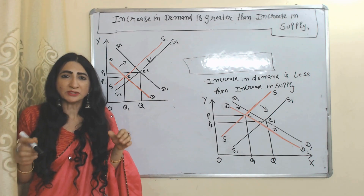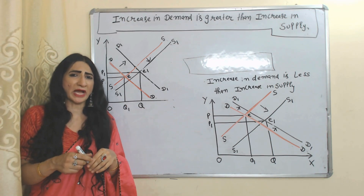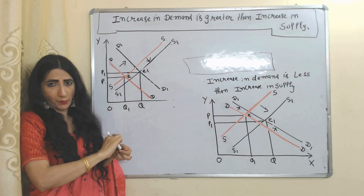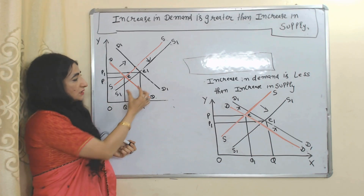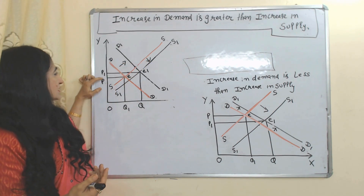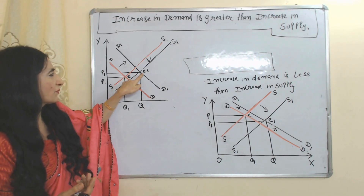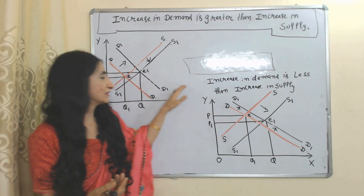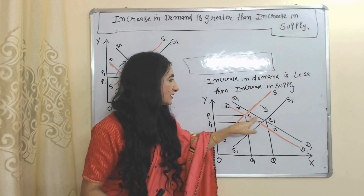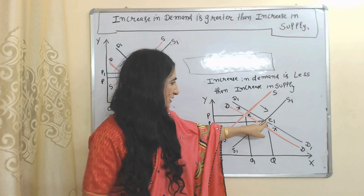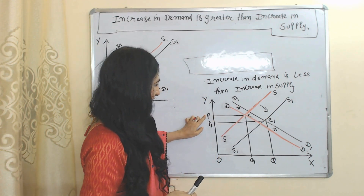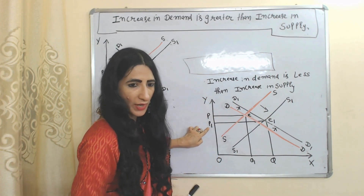Next case: increase in demand is greater than increase in supply — demand increases a lot but supply increases only a little bit. E is the initial equilibrium point, E1 is the new equilibrium point. Next case: increase in demand is less than increase in supply. E is the initial equilibrium point, E1 is the new equilibrium point. At this equilibrium point, demand increases only a little bit but supply increases a lot. As a result, price reduces from P to P1.